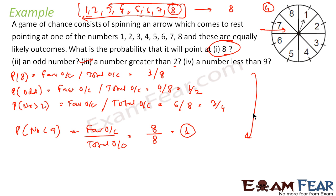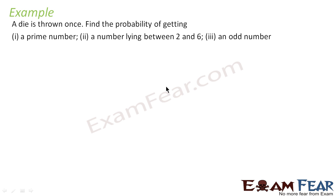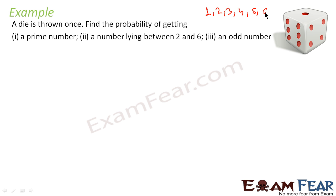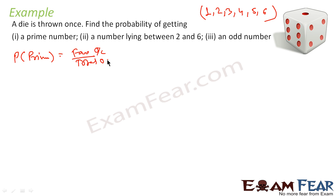One more question: a die is thrown. Find the probability of getting a prime number, a number lying between 2 and 6, and an odd number. This is the die — it has numbers from 1 to 6. The die is thrown and we have to find the probability of a prime number. Probability of prime is favorable outcome by total outcome. Total outcome is 6 because there are 6 possible outcomes. Favorable outcomes are prime numbers: 2, 3, and 5 — there are 3 prime numbers.